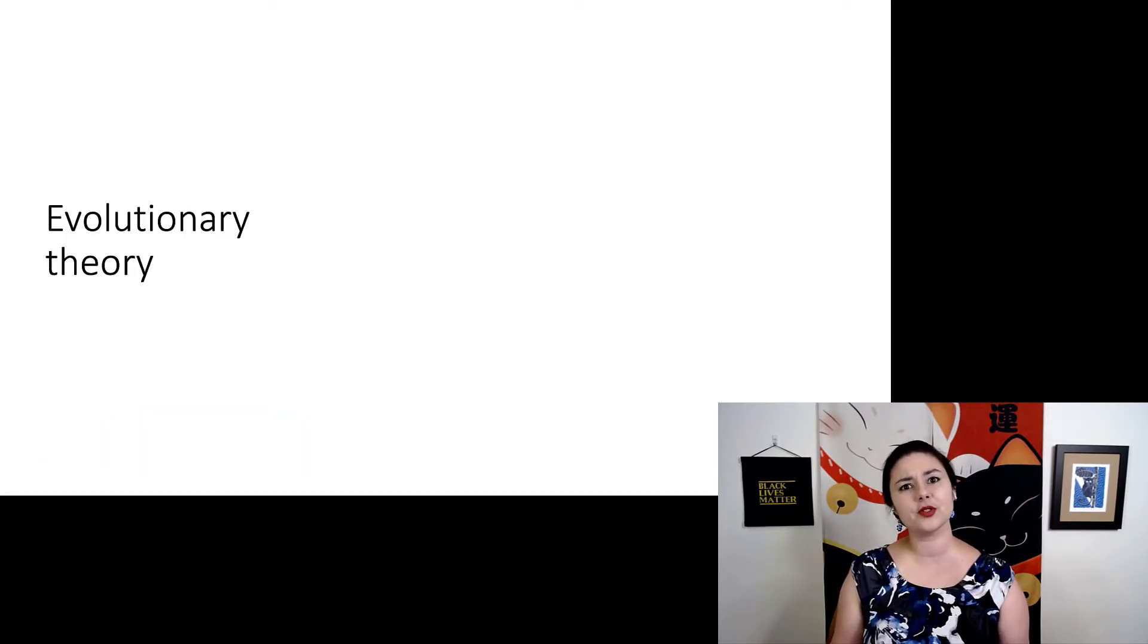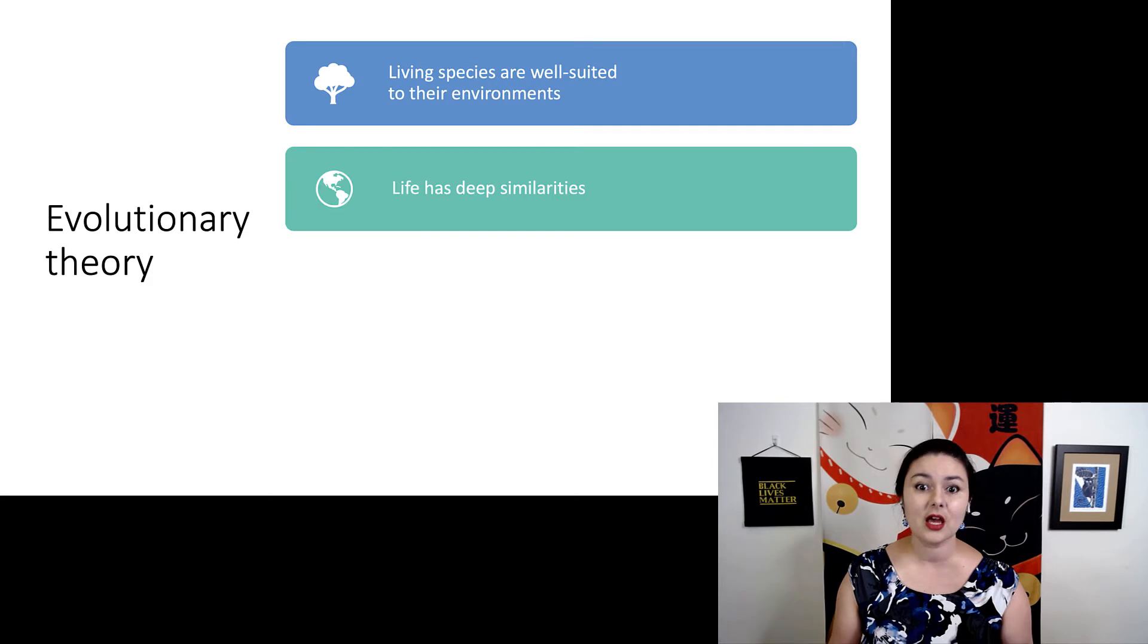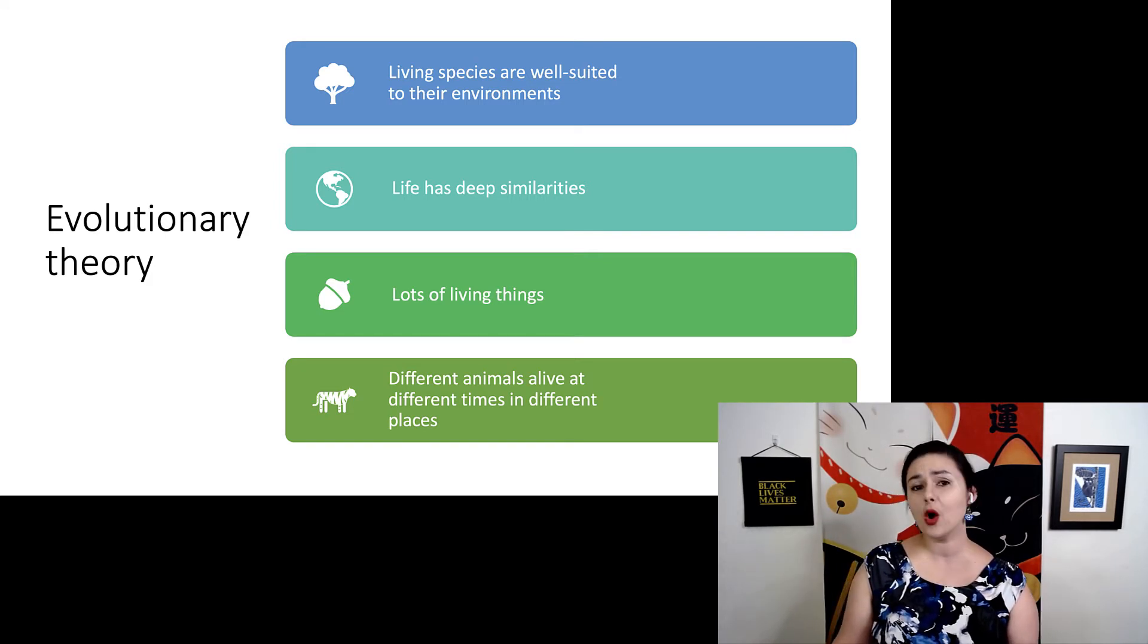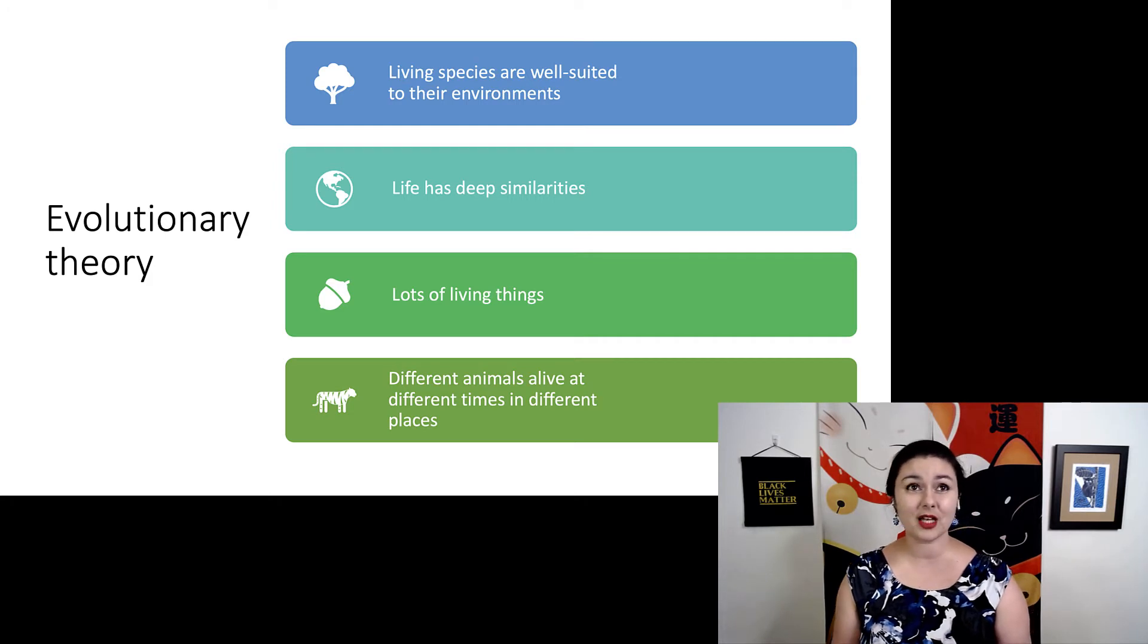So let's remember those key pieces of evidence that led us to understand the theory of evolution in the first place. People notice that species are well-suited to their environments. It's easiest to think of extreme environments, like how camels and cactuses are well-suited to deserts, or how penguins or polar bears are well-suited to living in cold environments.